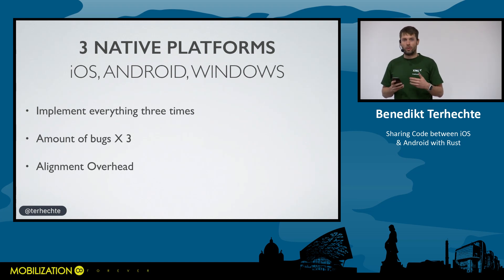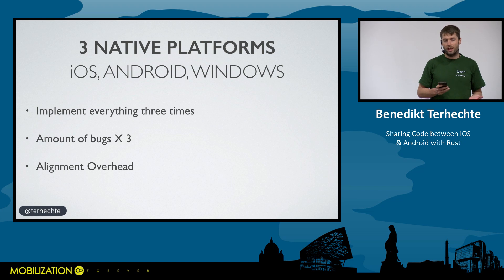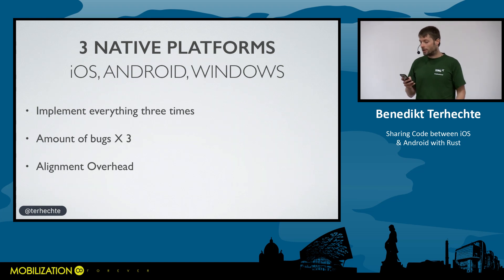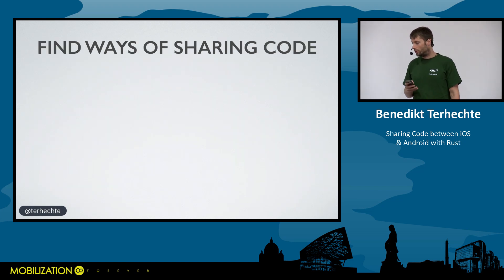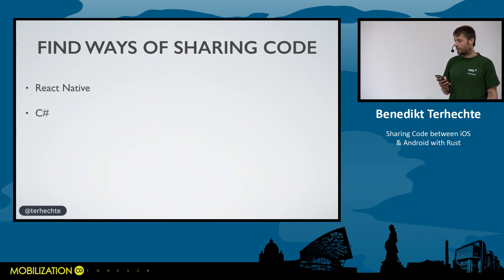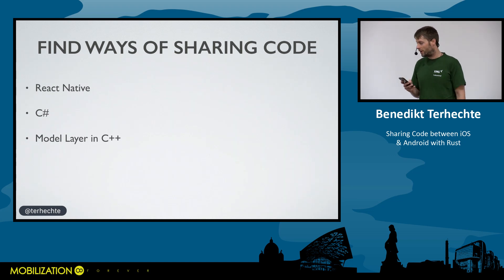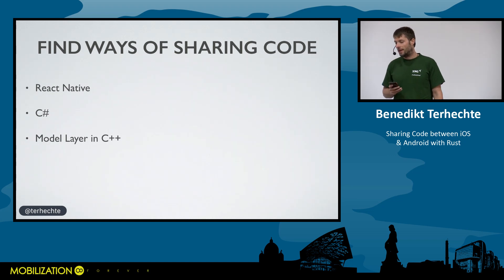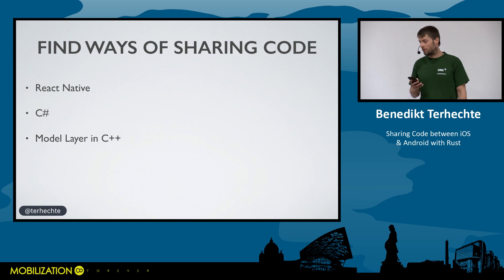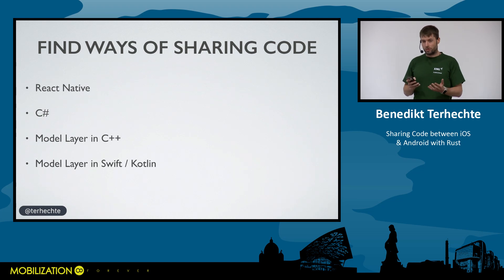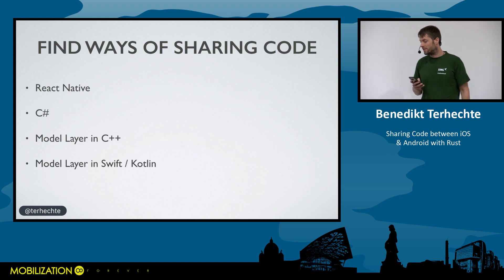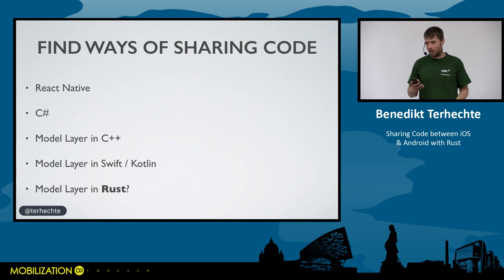That got us thinking: what are the ways we can use at Xing to actually reduce this overhead? There are a couple of ways of sharing code — React Native, C Sharp, a model layer written in C++ (used by Spotify and PSPDFKit), or maybe a model layer in Swift and Kotlin using Kotlin Native or Swift on multiple platforms. In this talk, we'll investigate some of these options, but mostly from the perspective of doing the model layer in Rust.